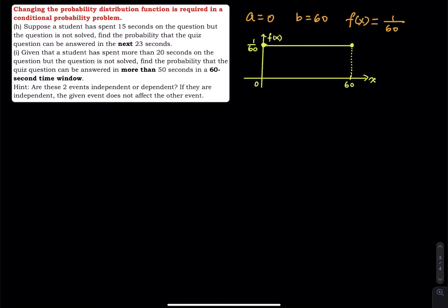So the minimum is 0, the maximum is 60, the probability density function is 1 divided by 60 minus 0, right? So we have 1 over 60 as our probability density function, and then there is the graph.